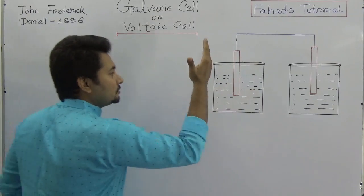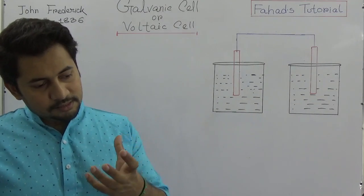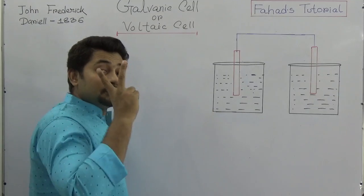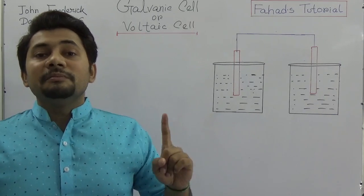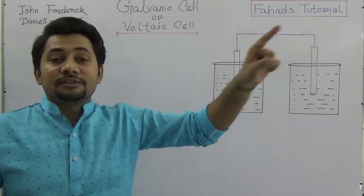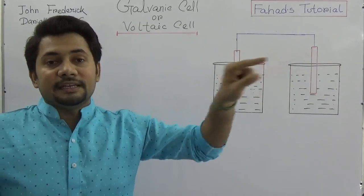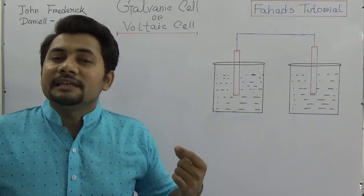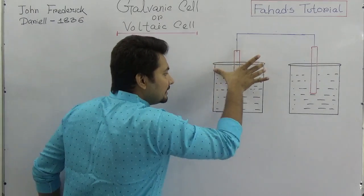So what's going on? You can see two different containers. Two glass or ceramic containers will be used, two different solutions will be used, and two different metals will be used. Among these two metals, one should be more reactive and one less reactive. Then two electrodes will be connected by a wire, which acts as an electric conductor to allow the flow of electrons.